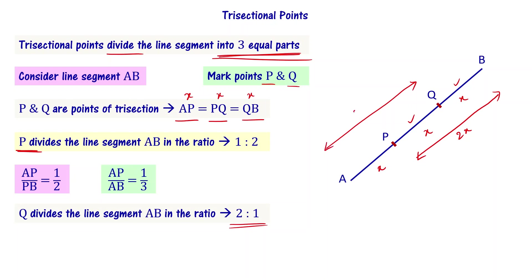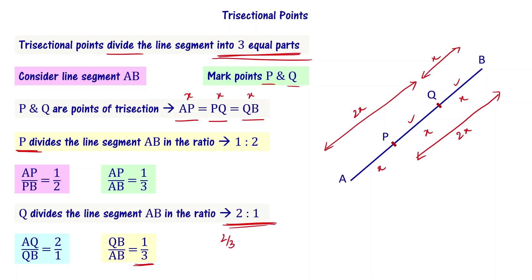Q is the other trisectional point. Q divides the line segment in the ratio 2 is to 1, since AQ equals 2x and QB equals x. So AQ by QB equals 2 by 1, meaning AQ by AB equals 2 by 3. Now you understand what trisectional points mean. We need to find two points: one dividing in ratio 1 is to 2, and another dividing in ratio 2 is to 1.